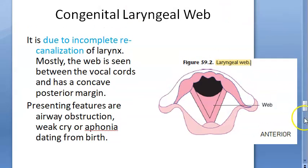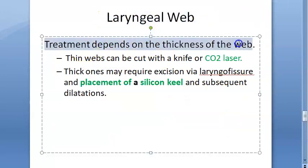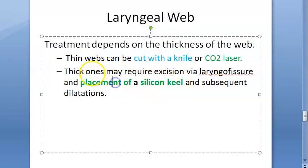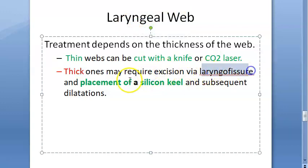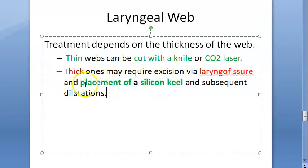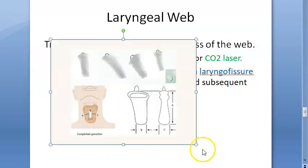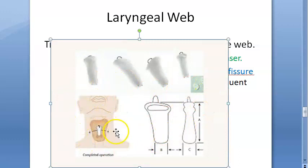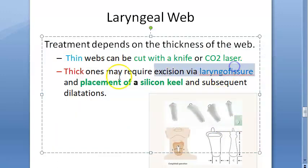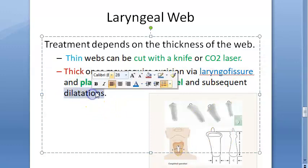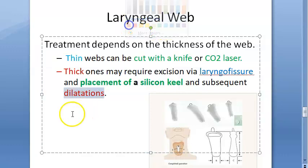Treatment depends on the thickness of the web. If it is thin, it can be cut with a knife or a laser. If it is thick, it may require excision via laryngofissure, placement of a silicone keel, and subsequent dilations to keep the airway open. The silicone keel is placed to prevent reformation of the web.